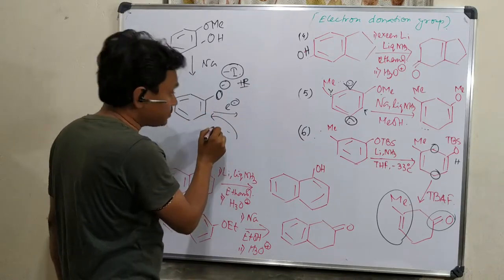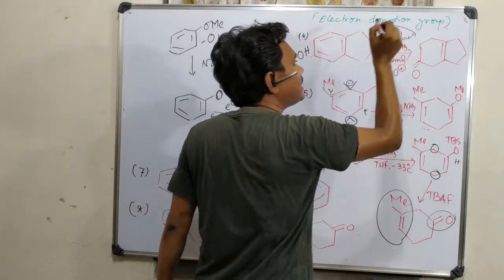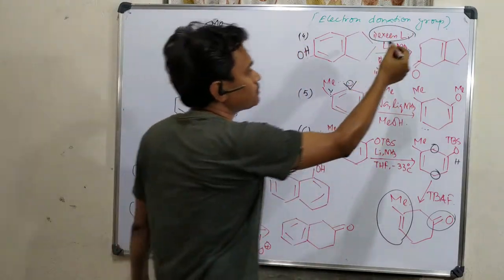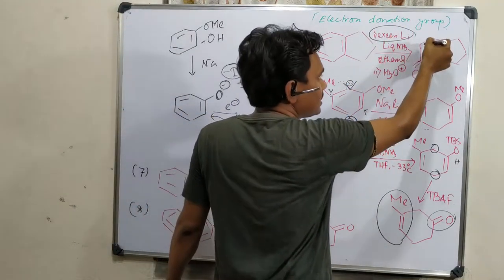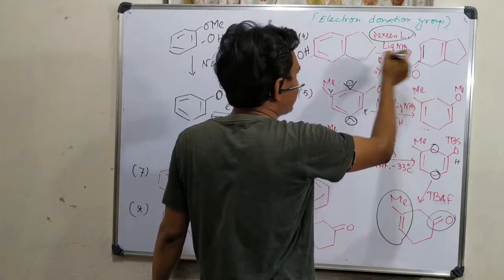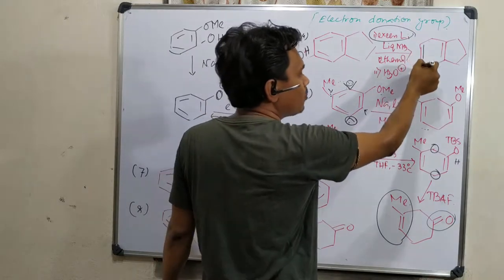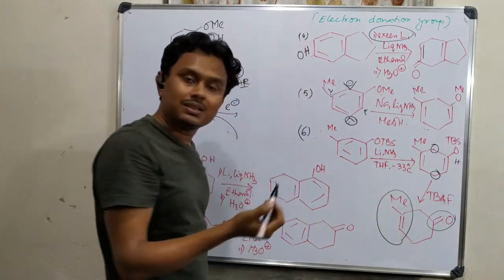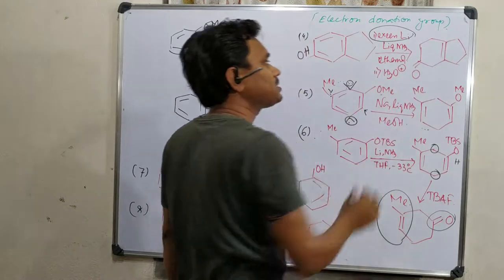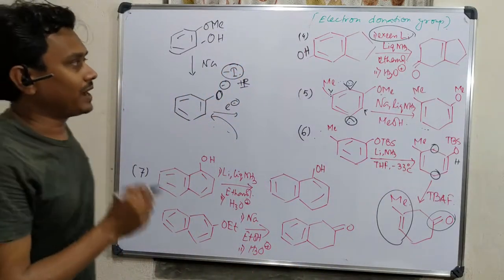That is the reason that reduction of such a type requires excess amount of lithium. And ultimately it produces a double bond with an O-minus. After workup, this O-minus gets protonated to prepare the enol, which undergoes tautomerization to produce the keto-carbonyl.